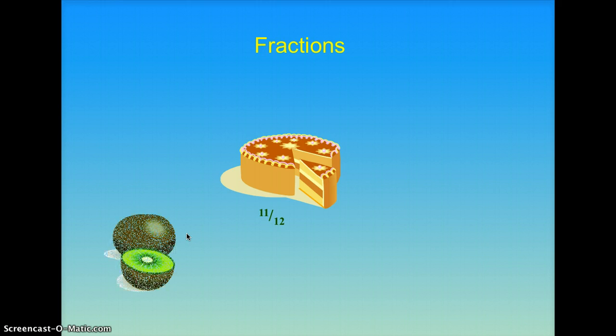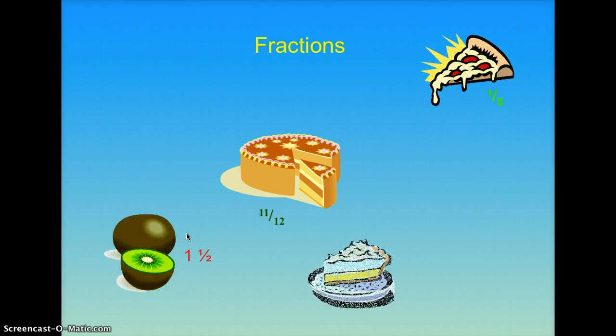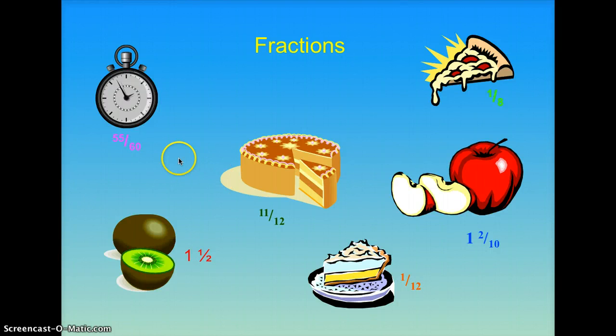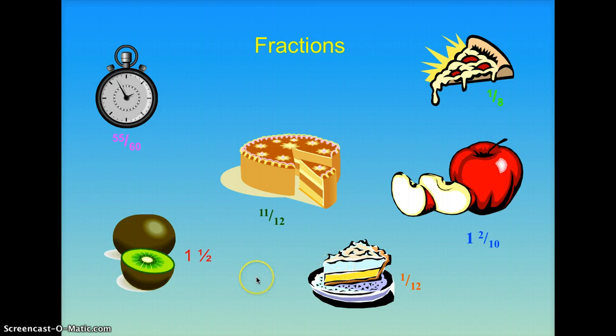Alright, so let's look at some fractions. You've got fractions — you have one and a half, eleven-twelfths, one-eighth, one-twelfth, one and two-tenths. And if you notice, fractions can talk about anything — whenever you've got time, how much time left, if you're sharing a pizza, how much of the pizza you've got, how much of a fruit you need. It can be about anything. You've got different fractions: you have the mixed numbers and improper fractions in simplest form.